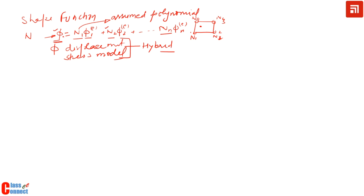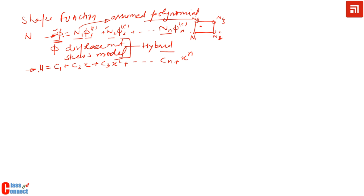The field variables are assumed as polynomials. We use polynomials because it is easy to handle the mathematics, and if we select a proper polynomial then this approximation of phi — the field variable — can match the exact result more closely. Let us assume that u is the displacement within the element, given by c1 plus c2*x plus c3*x² plus ... plus c_(n+1)*x^n. This is our assumed polynomial, where c1, c2, c3 up to c_(n+1) are the constants of the polynomial.